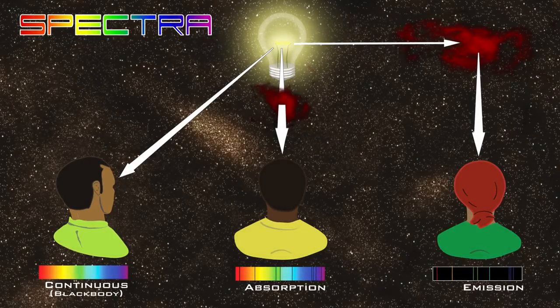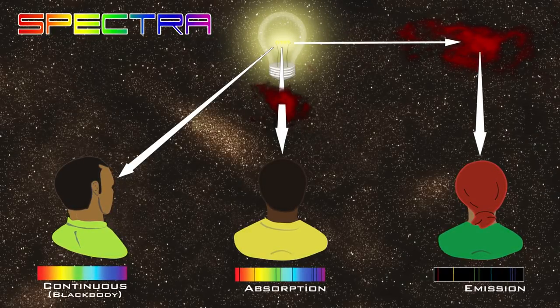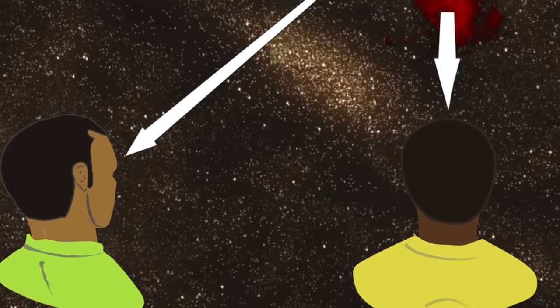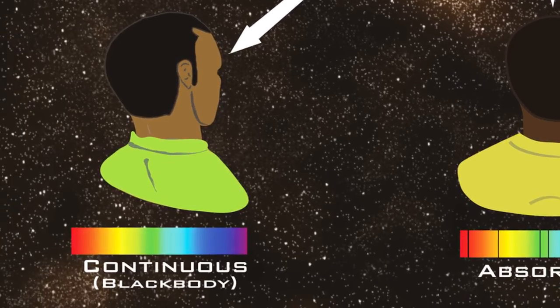Kirchhoff's laws describe the types of spectra produced by various objects under various circumstances. One of Kirchhoff's laws is that a dense gas or a solid, like a lightbulb filament, produces a black body spectrum.